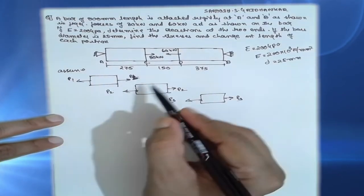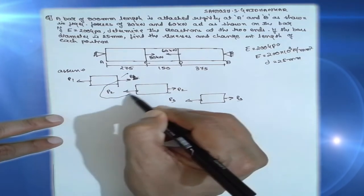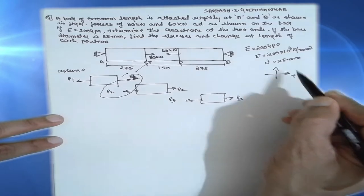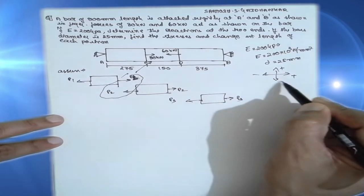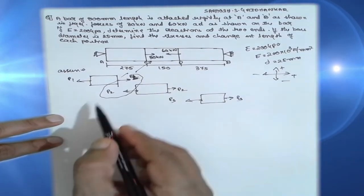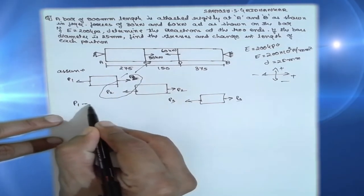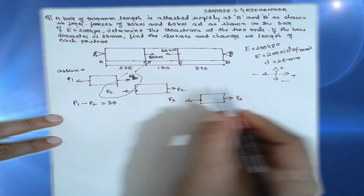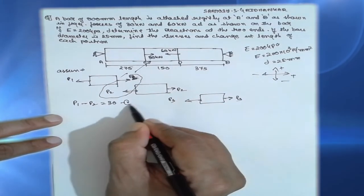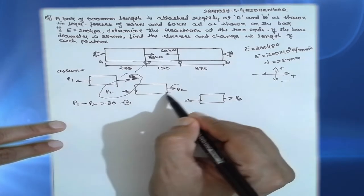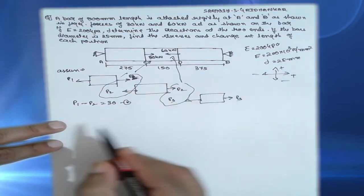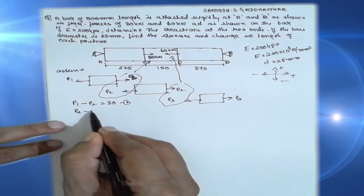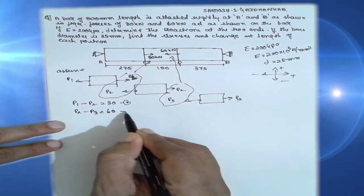With these assumptions, I will create equilibrium equations. For the first section: P1 is positive, P2 is negative, giving P1 minus P2 equals 30 kilo Newton — equation one. For the second section: P2 is positive, P3 is negative, giving P2 minus P3 equals 60 kilo Newton — equation two.